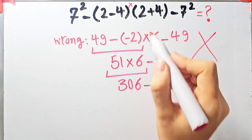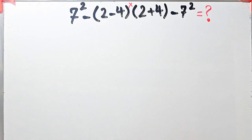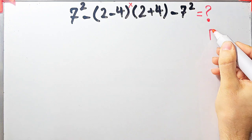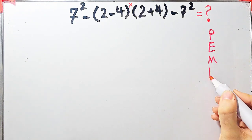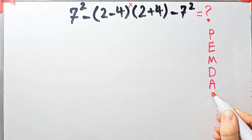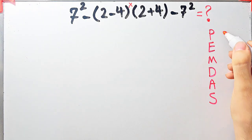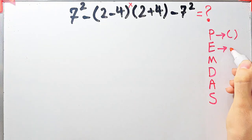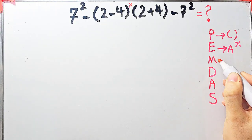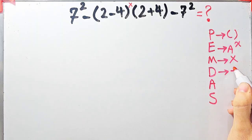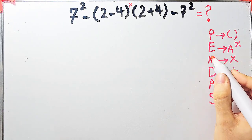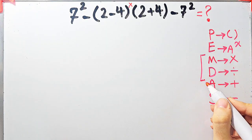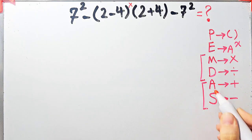Let's solve this question step by step together. To solve this question, we need to follow the PEMDAS rule. PEMDAS shows the priority of the mathematical operations, and if you don't pay attention to this rule, you get the wrong answer. P stands for parentheses, E stands for exponents, M stands for multiplication, D stands for division, A stands for addition, and S stands for subtraction. Multiplication and division have the same priority, as do addition and subtraction. When we have both, we start from the left.